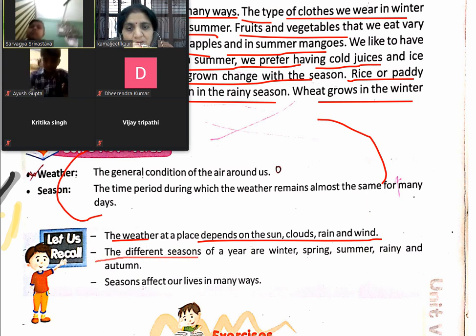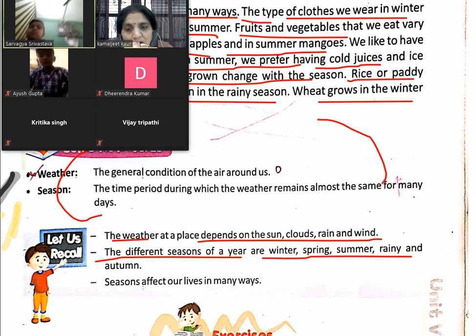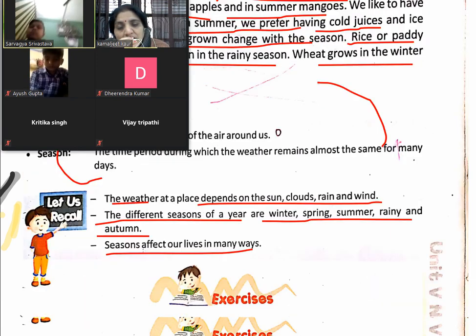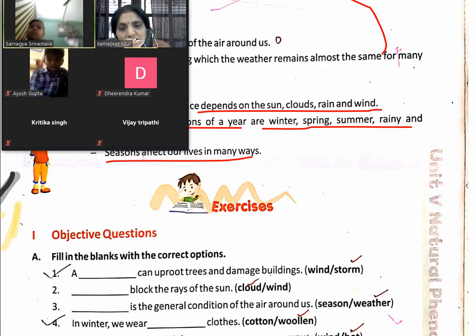The different seasons of the year are winter, spring, summer, rainy, and autumn. These are the five main seasons of India, and the seasons affect our lives in many ways.